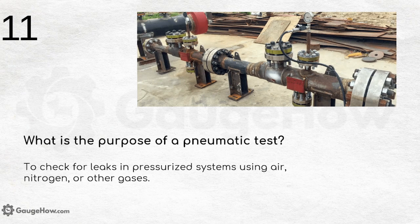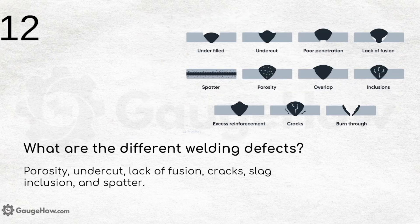What is the purpose of a pneumatic test? It is used to check for leaks in pressurized systems using air, nitrogen, or other gases. Pneumatic tests are mostly performed in industries related to pressure leaks or gases.